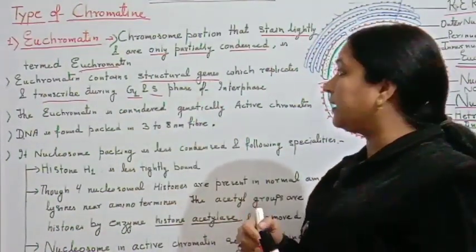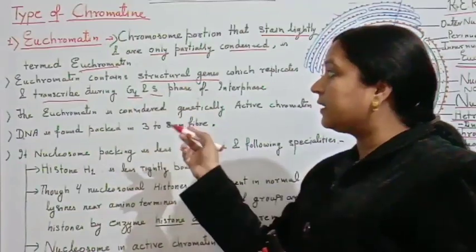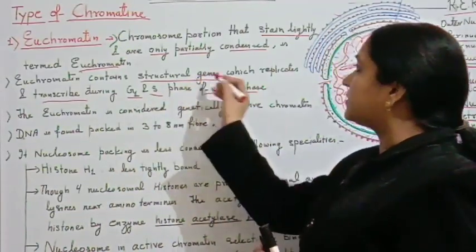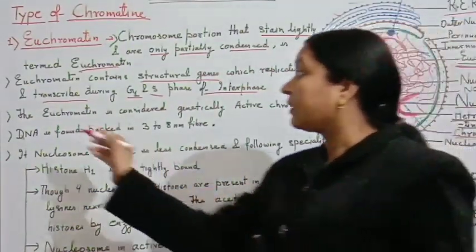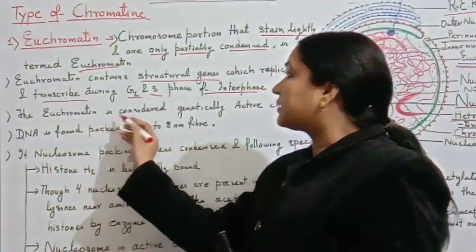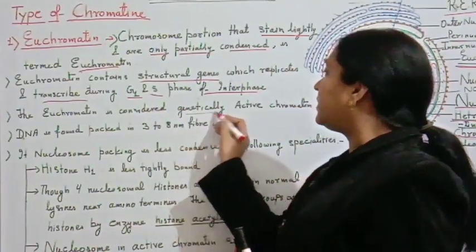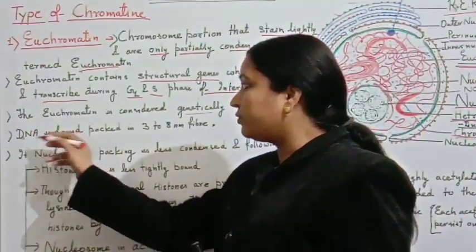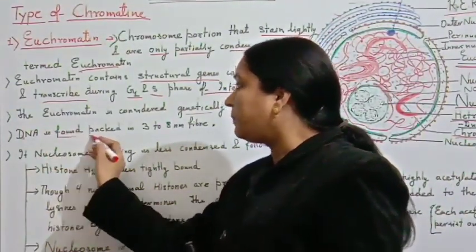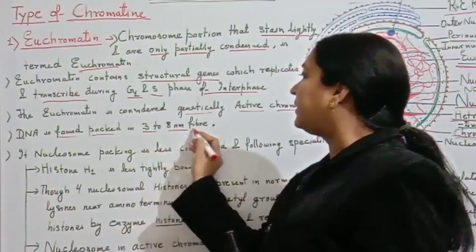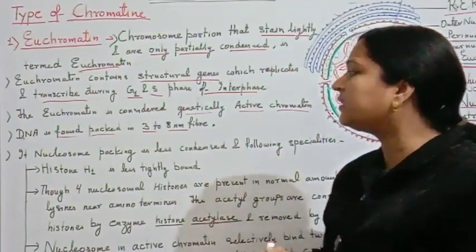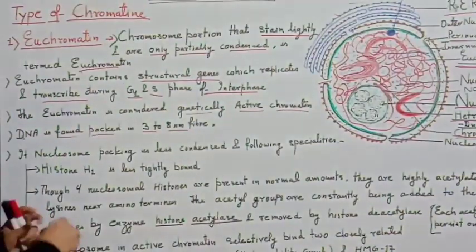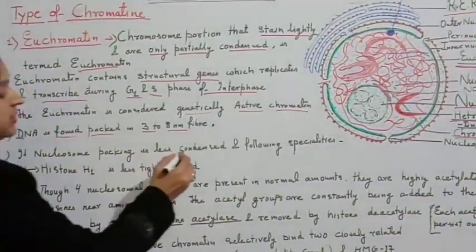Euchromatin contains structural genes which replicate and are transcribed during G1 and S phase. Euchromatin is considered genetically active chromatin. The DNA is found packed in 3 to 8 nm fibers, and nucleosome packing is less condensed.